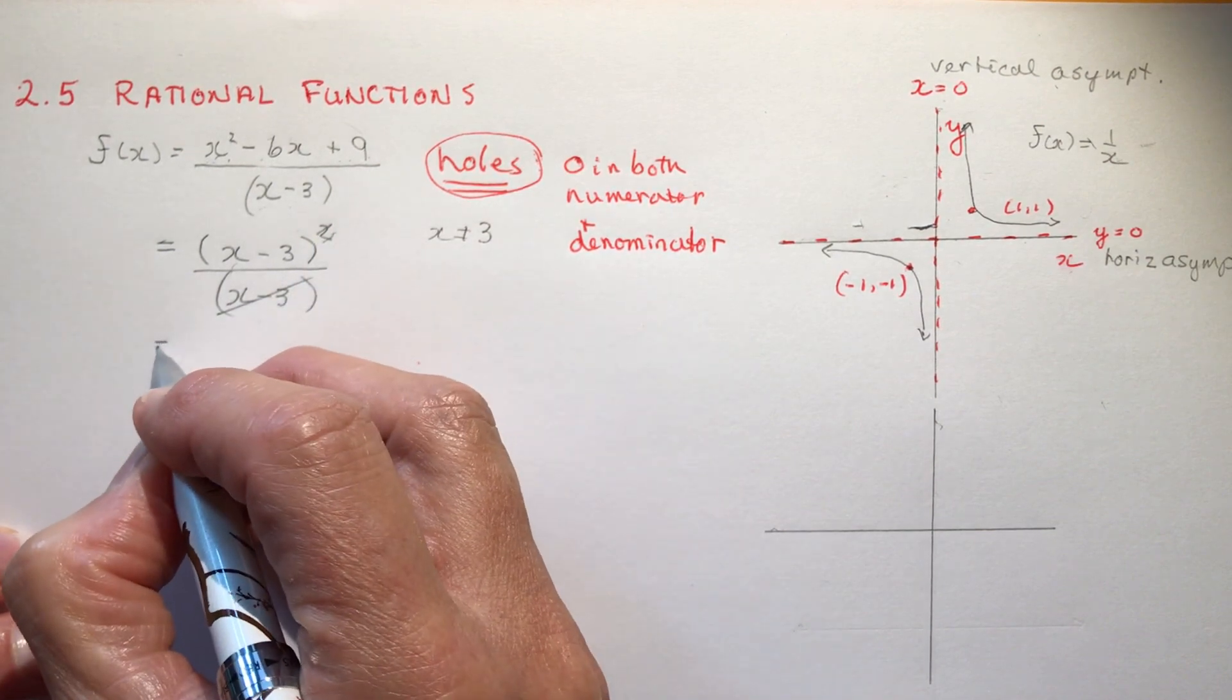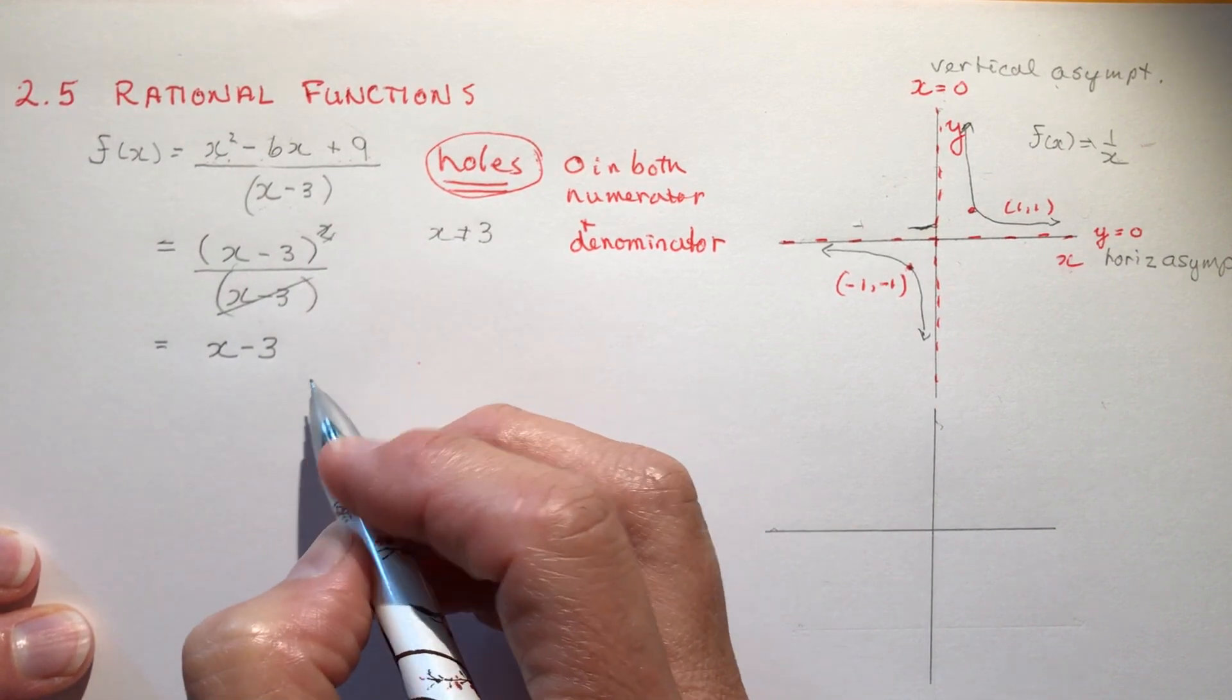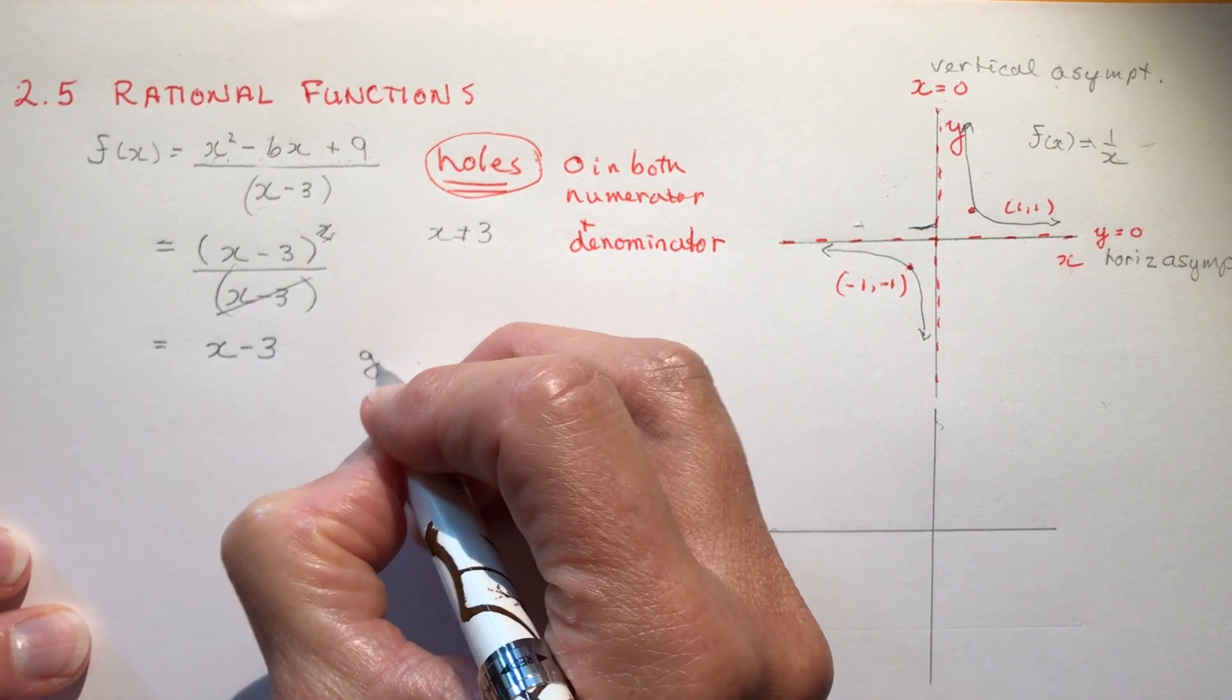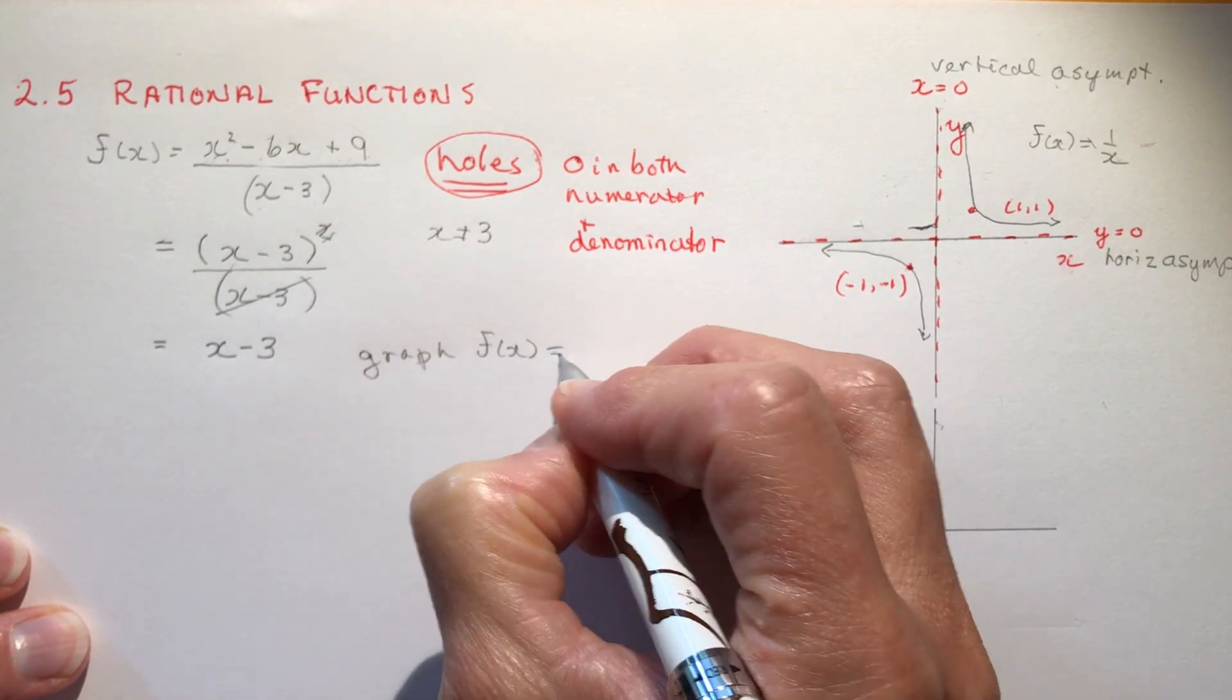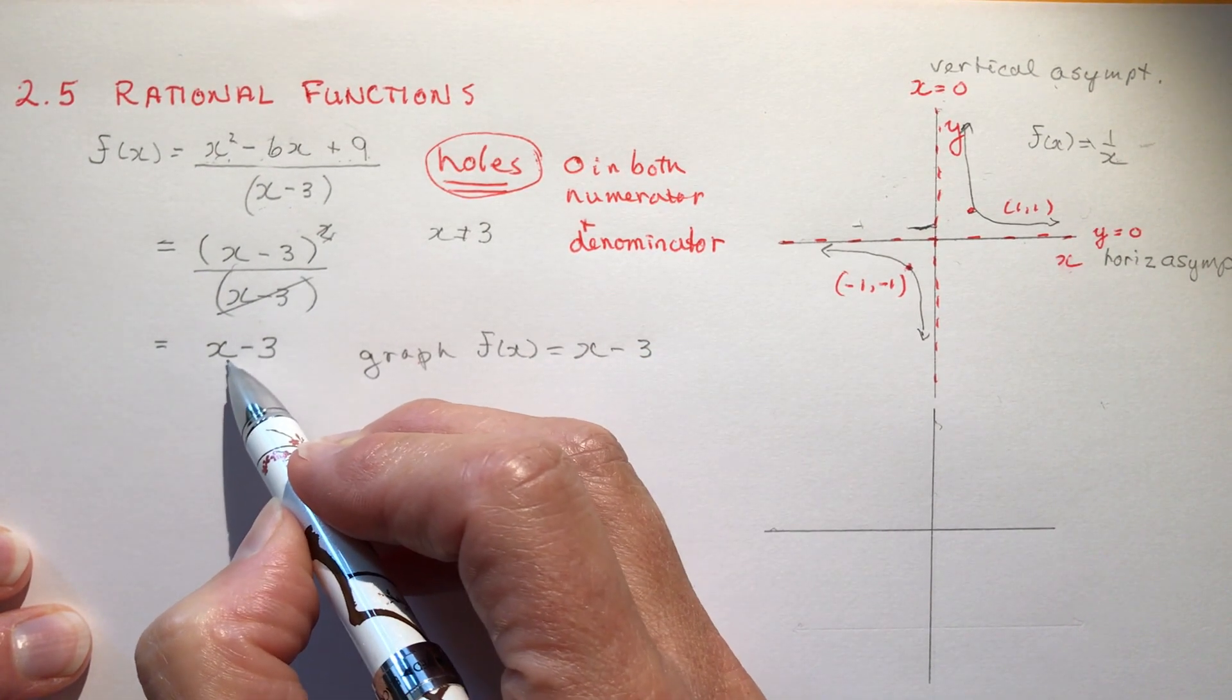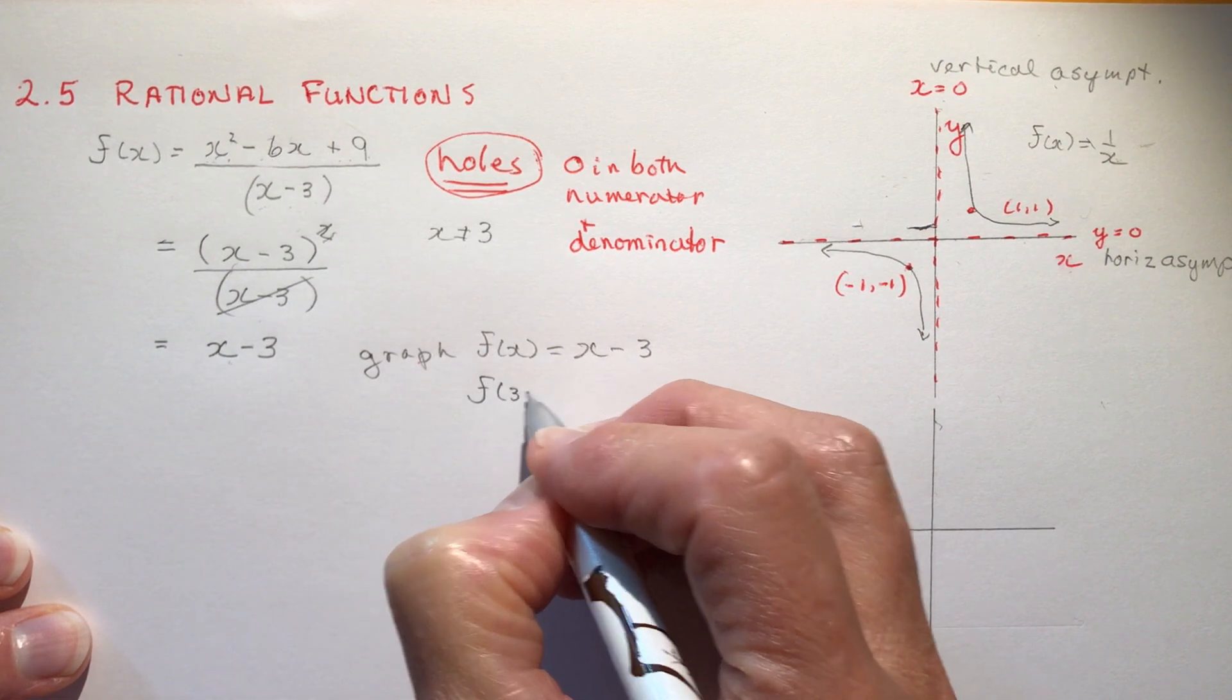So you can see what would happen here is that I could simplify this expression by dividing one (x - 3) into one of these and my function would actually be this. So if you wanted to graph this function now you would graph the line, the simplified function.